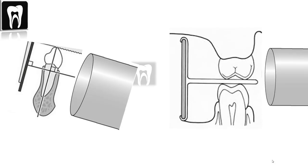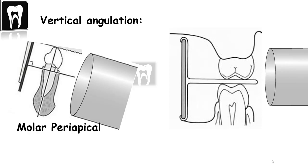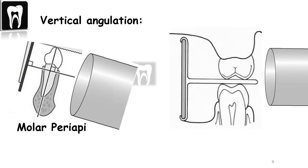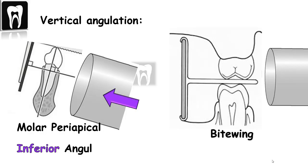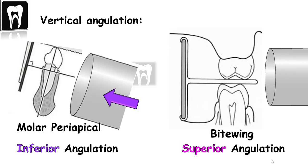The SLOB rule can be used with vertical angle changes; however, it is usually used with horizontal angle changes. When referring to vertical angle changes, one image is described as inferior or superior. For example, when using two radiographs — a mandibular molar periapical radiograph and a molar bitewing radiograph — the mandibular molar periapical radiograph is taken with the inferior position of the tube, and the molar bitewing radiograph has the tube in a superior or parallel position, so it would be superior relative to the periapical radiograph.